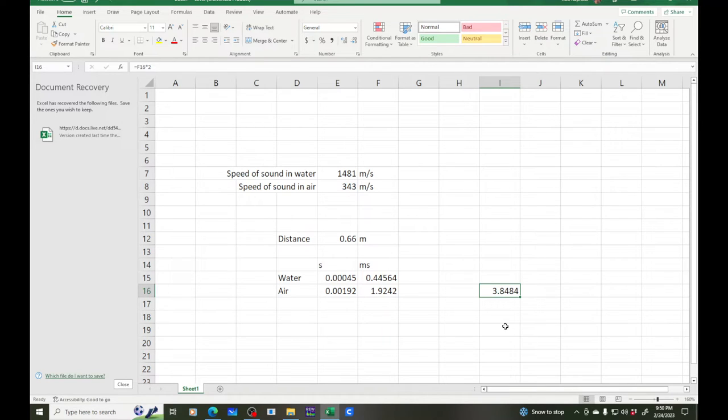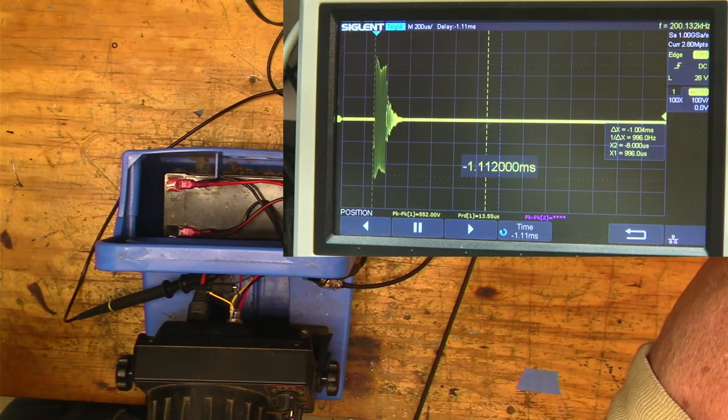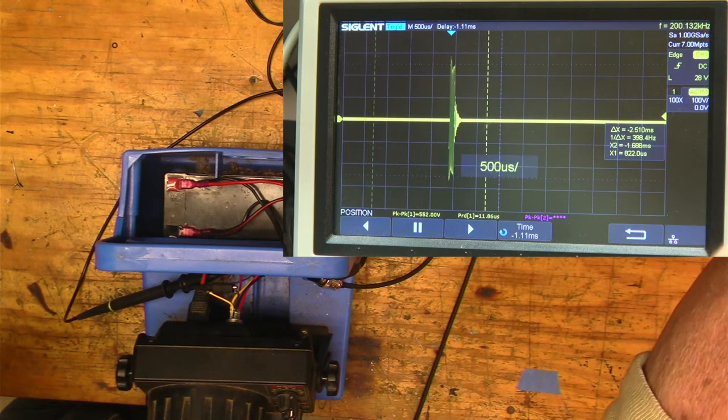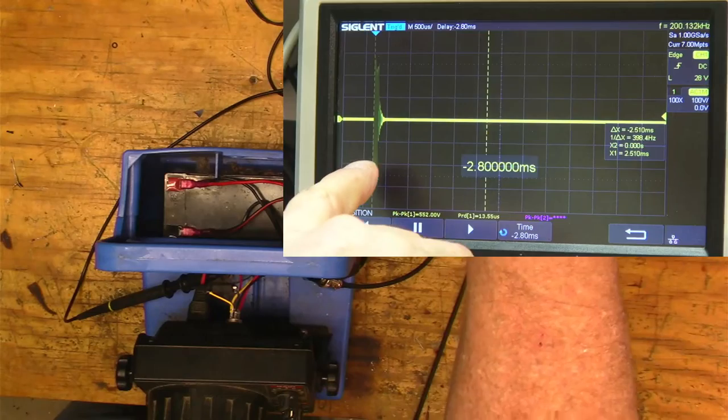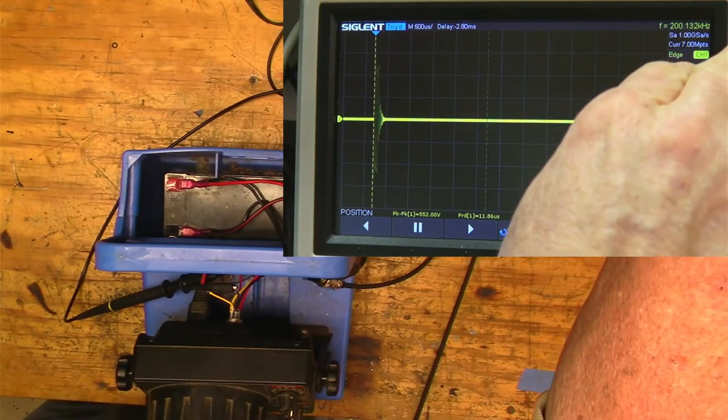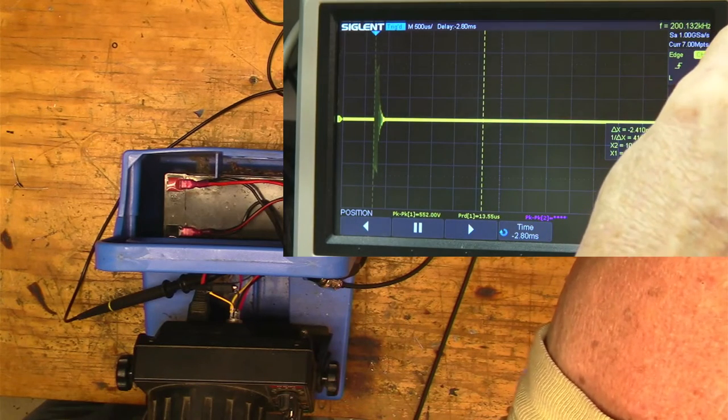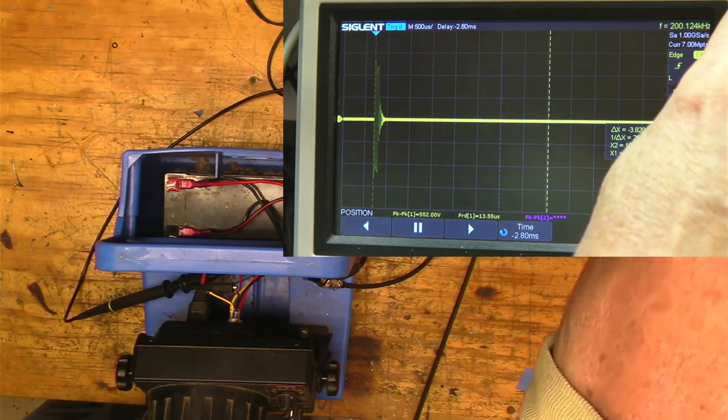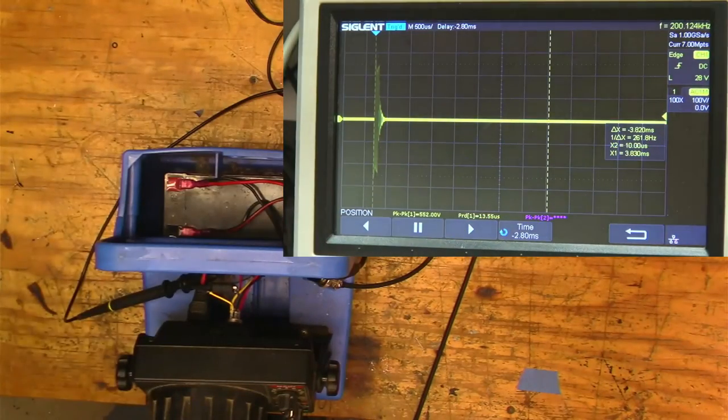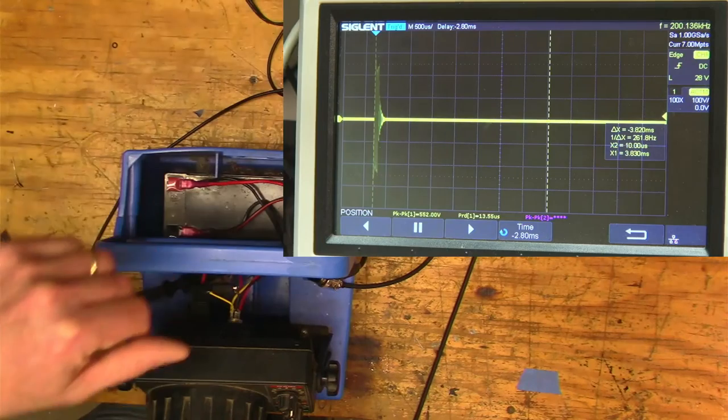So after our initial pulse, 3.84 milliseconds after our initial pulse, we should see the response, right? But if we look here, let me move this over and shrink it a little bit. So if we have our first, okay, we got that there. And if I go out about 3.8 milliseconds, there's nothing that we can see there, right? But that's because the signal coming back is so small, right? It's in the tens of millivolts. And here, this signal is 500 volts, right?